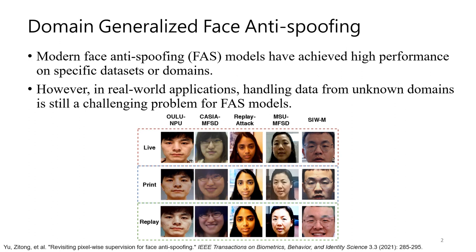However, the query images are usually from unknown domains in real-world applications. As the figures show, images from different domains have different lighting conditions or color tones, resulting in decreased performance for FAS models. Hence, handling data from unknown domains is still challenging for face anti-spoofing.